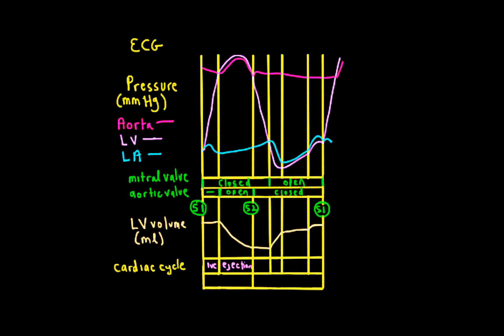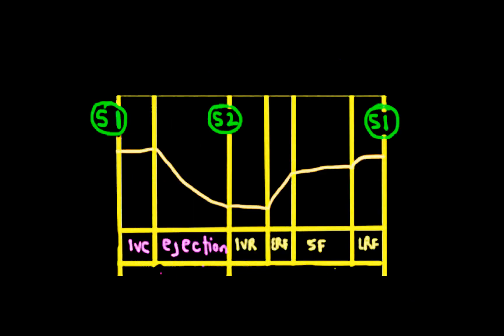Once the aortic valve closes, I have an isovolumetric relaxation phase again because no blood's coming in, no blood's leaving, and the pressure's falling because the ventricle's relaxing. Once the mitral valve opens, I have my early rapid filling phase, my slow filling phase, and also a late rapid filling phase — and that's due to atrial contraction or atrial systole.